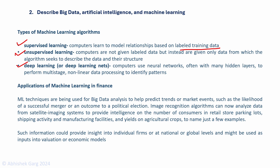What are the applications of machine learning in finance? Machine learning techniques are used for big data analysis to help predict trends or market events such as the likelihood of a successful merger or the outcome of a political election. Image recognition algorithms can analyze data from satellite imaging systems to provide intelligence on the number of consumers in a retail store, parking lots and agricultural activity. This information can provide insight into individual firms at a national or global level and might be used as inputs into valuation or economic models — for example, tracking whether footfall in retail stores has increased or decreased.